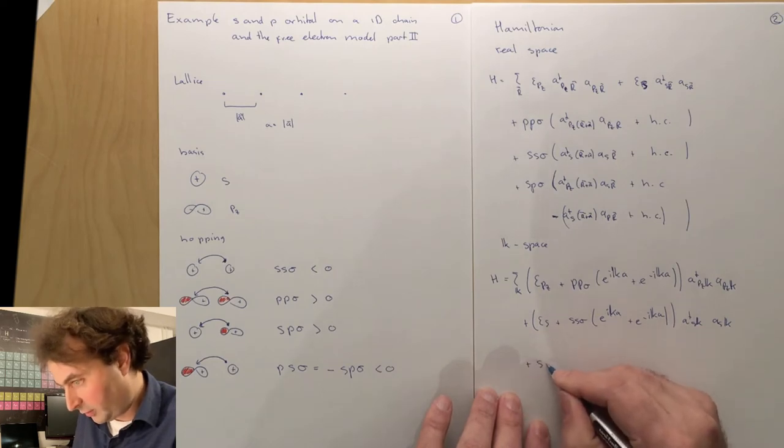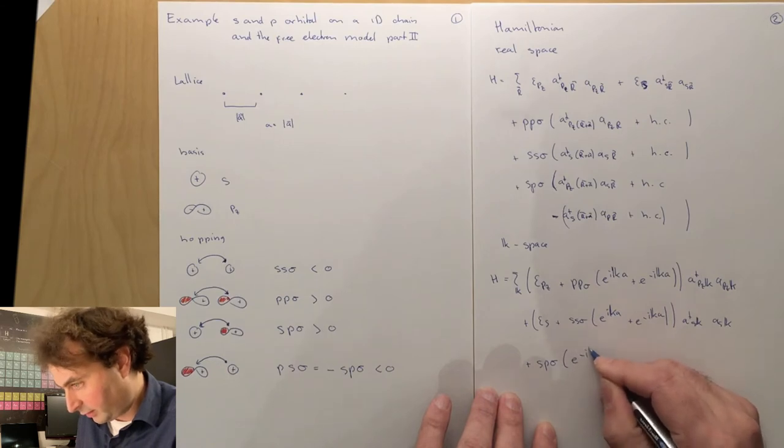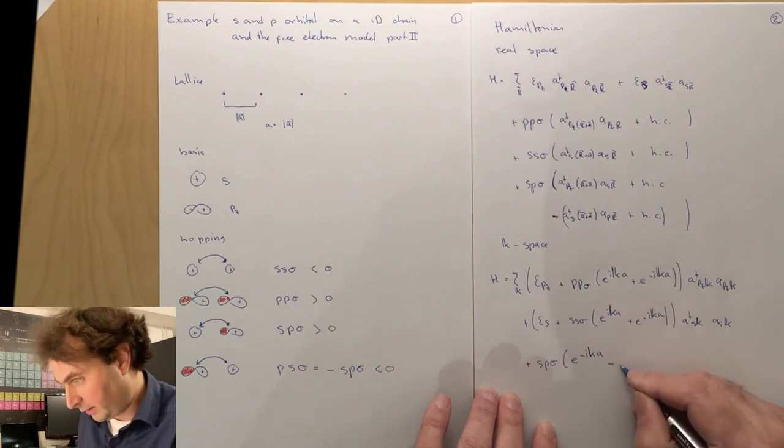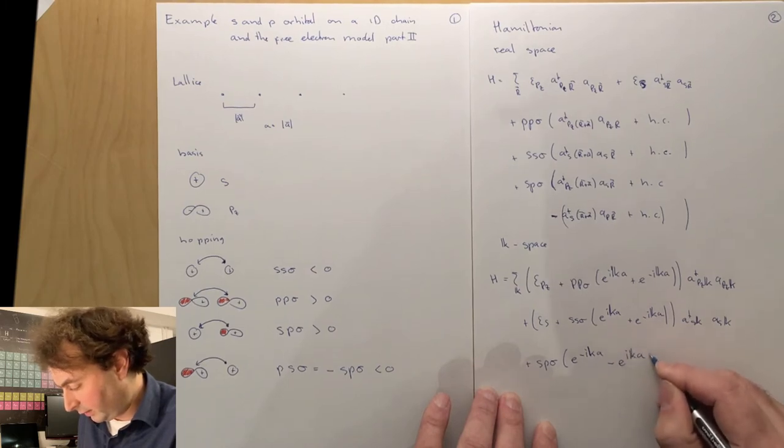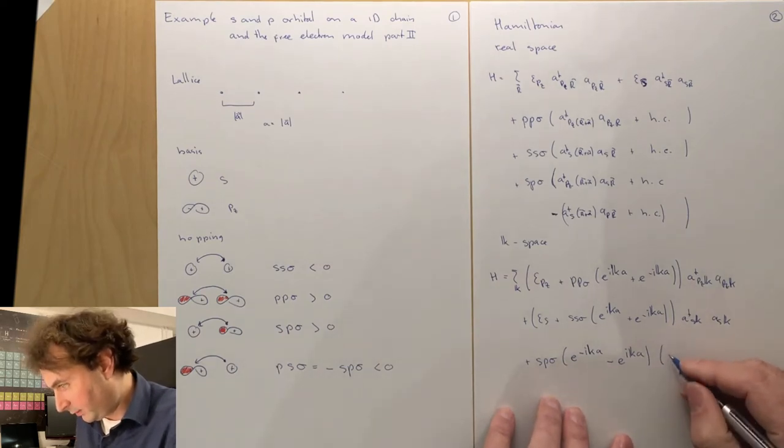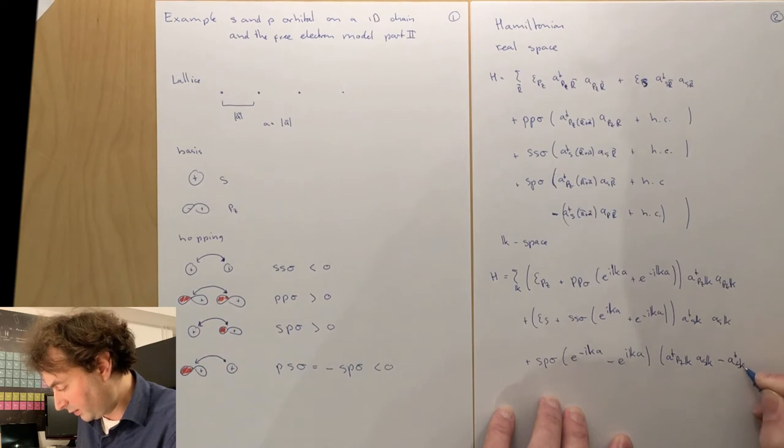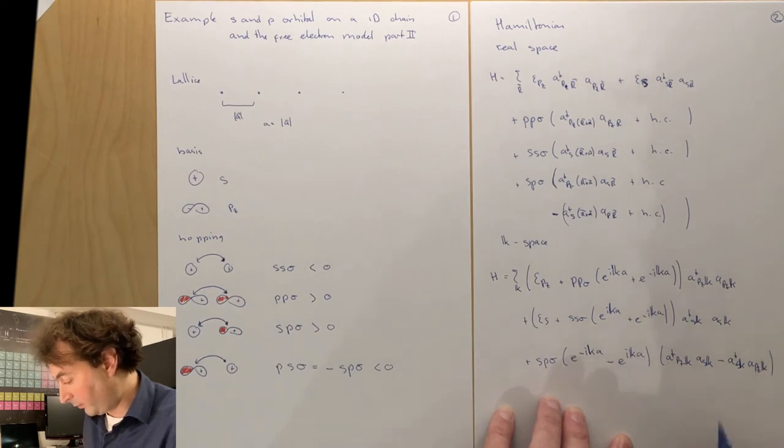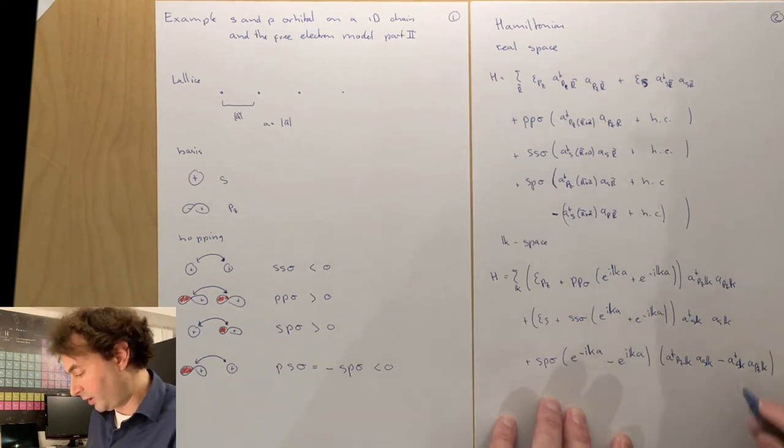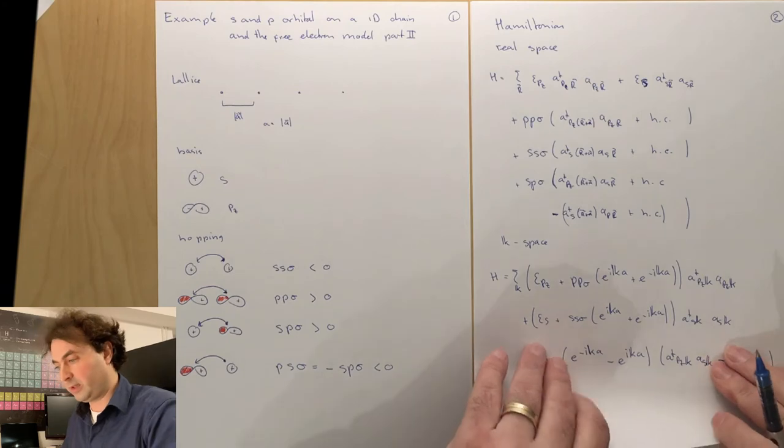And then we have the interaction between the s and the p orbital: sp sigma times e to the minus ika minus e to the ika, because hopping to the left and to the right gives you the opposite sign. Then a dagger pz k, as k, minus a dagger s k, apz k. This looks odd because you change sign when you Hermitian conjugate, but the pre-factor is complex, so that is okay when you have a Hermitian Hamiltonian.